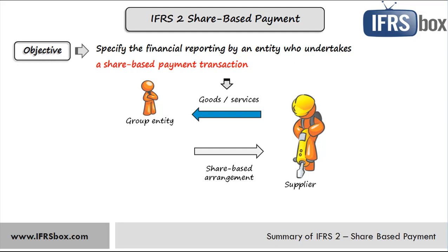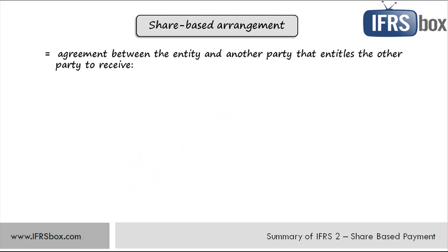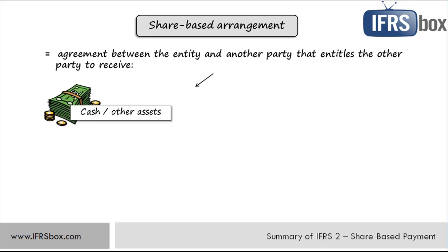Another group company receives the goods or services, but if the liability to pay for them by share-based payment arrangement is transferred to an entity, then IFRS 2 applies to the entity that needs to pay. A share-based arrangement is an agreement between the entity and another party that entitles the other party to receive either cash or other assets for amounts that are based on the price or value of the entity's equity instruments. In this case, the supplier gets paid for its goods or services by cash, but the amount of cash is determined with reference to the entity's equity instruments' price. These transactions are called cash-settled.